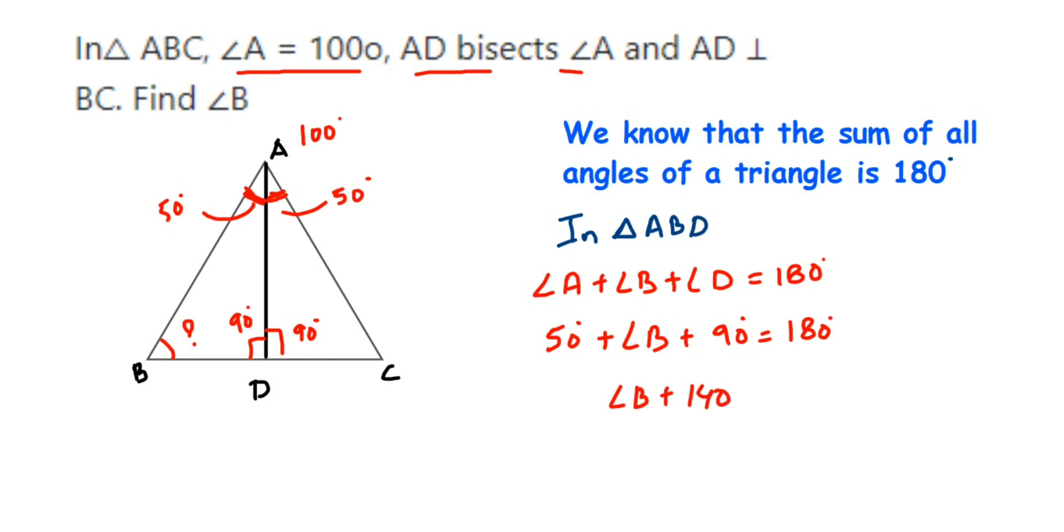to the other side, the sign will change and it will become negative. So 180 minus 140 will equal 40 degrees. Therefore, we got angle B equals 40 degrees.